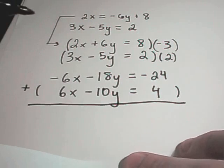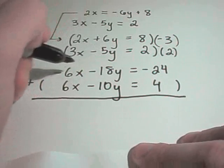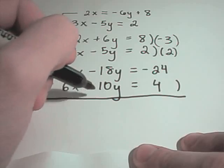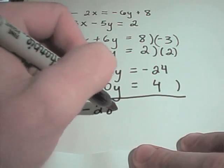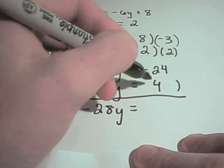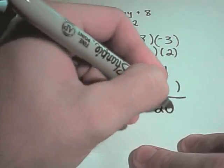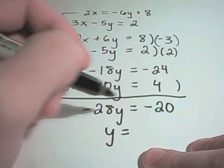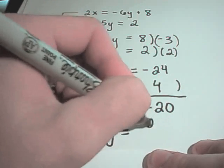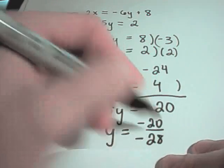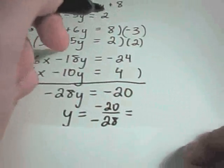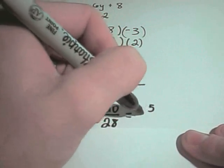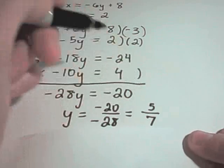So I'll add these together. My 6x's will cancel. It looks like I'll get negative 18y plus negative 10y, which is negative 28y. Negative 24 plus 4 is negative 20. I could divide both sides by negative 28. That would give me negative 20 over negative 28. Two negatives make a positive. Looks like 4 goes into both of these. And we would get 5 sevenths for y.